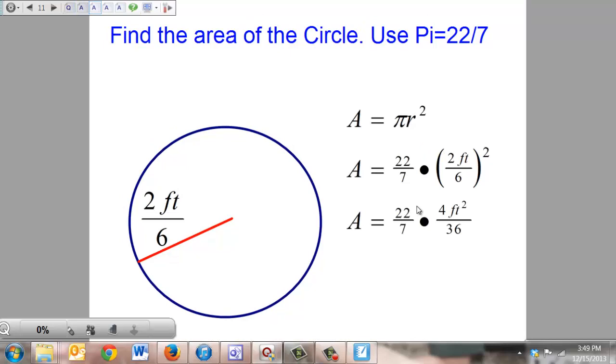Instead, I squared everything inside the grouping symbol. 2 squared is 4, 6 squared is 36, feet squared is feet squared.